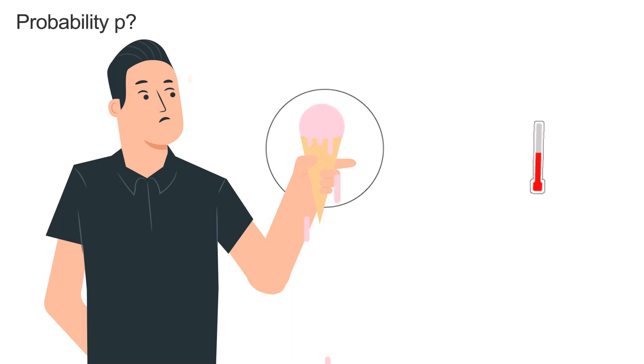How can you figure out the probability of your ice cream melting completely within five minutes on a hot sunny day?